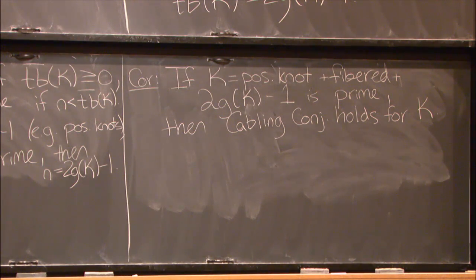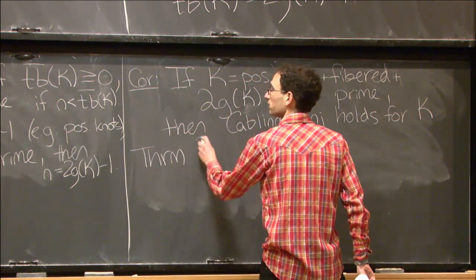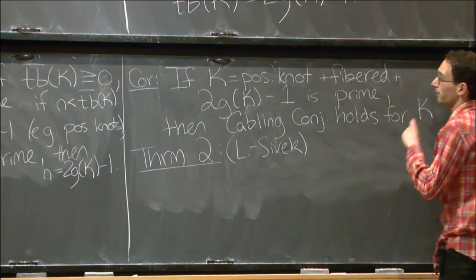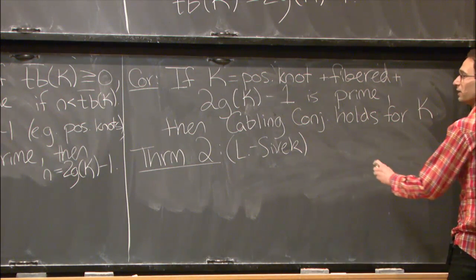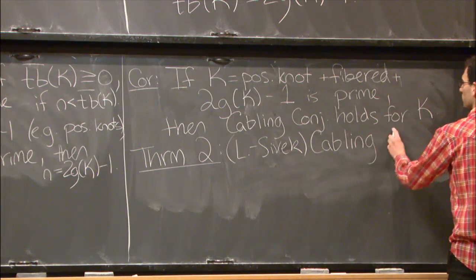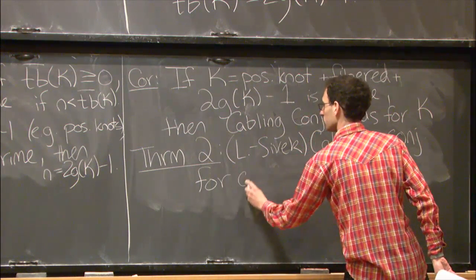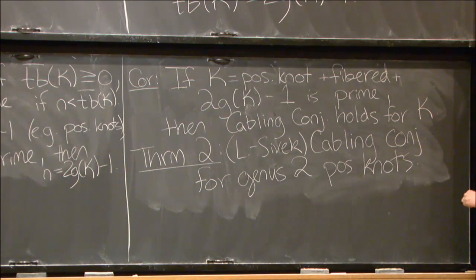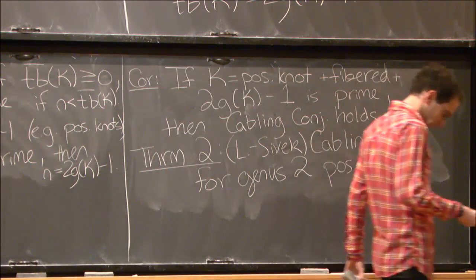Let me point out one more result from similar arguments. Using some techniques from Heegaard Floer homology in addition, you can prove the Cabling Conjecture for genus-2 positive knots—here you can drop the fiberedness condition but must restrict the genus.